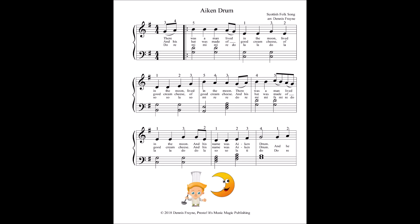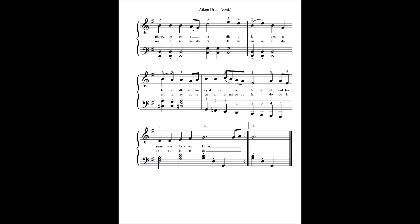Then we go to the second verse, which has the same melody as the first: And his hat was made of good cream cheese, of good cream cheese, of good cream cheese, and his hat was made of good cream cheese, and his name was Aiken Drum. So we see how the chorus is going to be exactly the same, so it's only written one time. And he played upon a ladle, a ladle, a ladle, and he played upon a ladle, and his name was Aiken Drum.